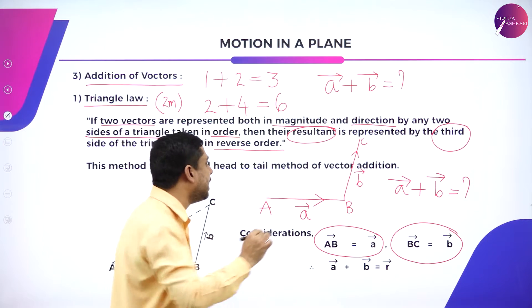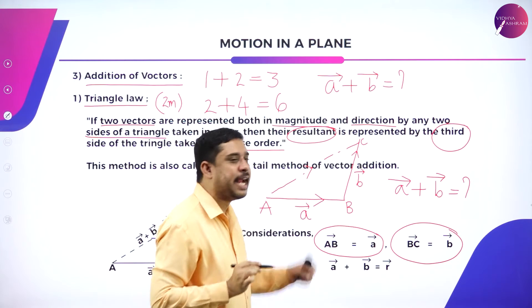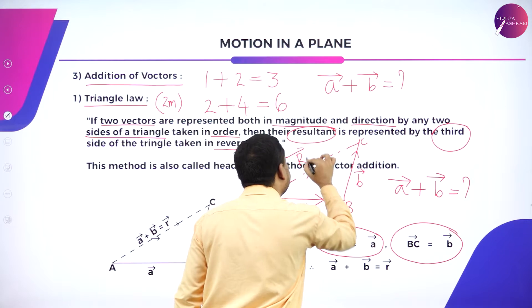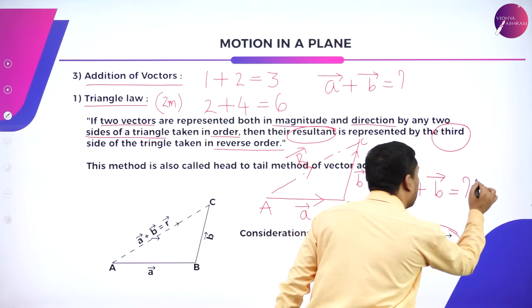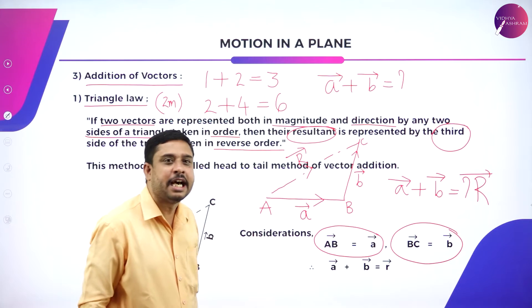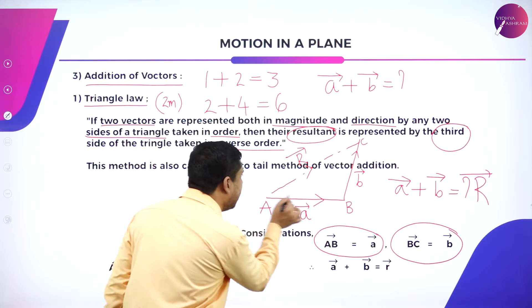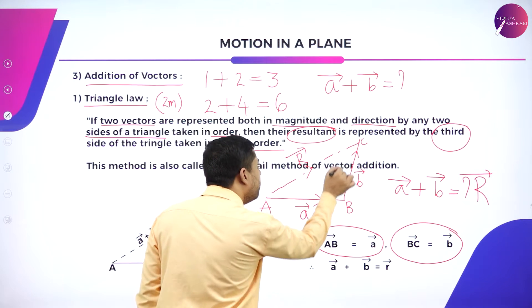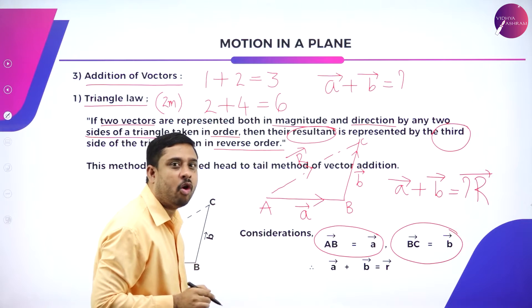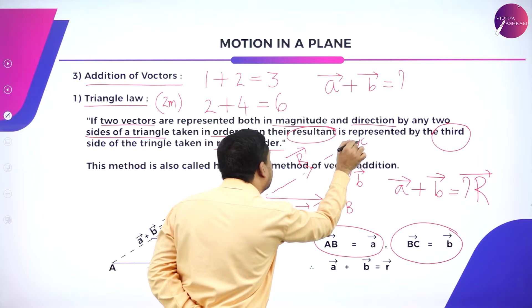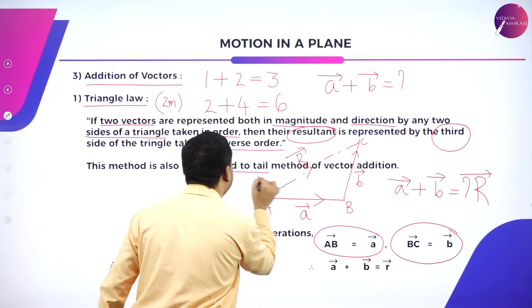I want the third side, so I join AC. This third side gives me the resultant, which is the sum of vector A and vector B. So vector A plus vector B equals vector R, the resultant. The direction is reversed: A to B was one direction, B to C was another, and the resultant is given by A to C, which is the reverse direction — not C to A.